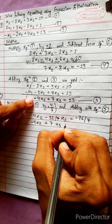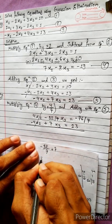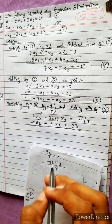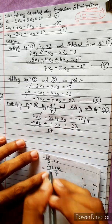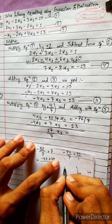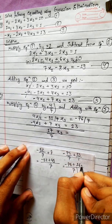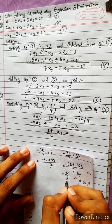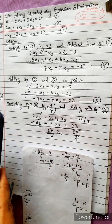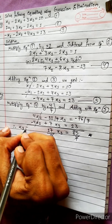Adding with equation 5: -4x2 + 7x3 = 23. The x2 terms cancel. For x3: 7 + (-32/7) = (49 - 32)/7 = 17/7. On the right: -76/7 + 23 = (-76 + 161)/7 = 85/7. So 17/7 × x3 = 85/7, meaning x3 = 85/17 = 5.